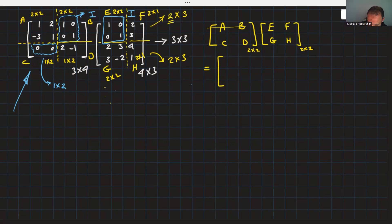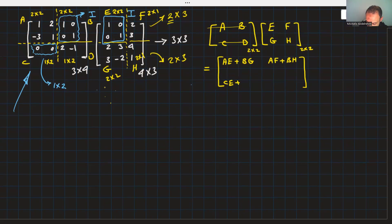So, write this normally: A, B, E, G. This is AE plus BG. Then A, B, F, H, AF plus BH. Then C, D, E, G, CE plus DG. C, D, F, H, this will be CF plus DH.